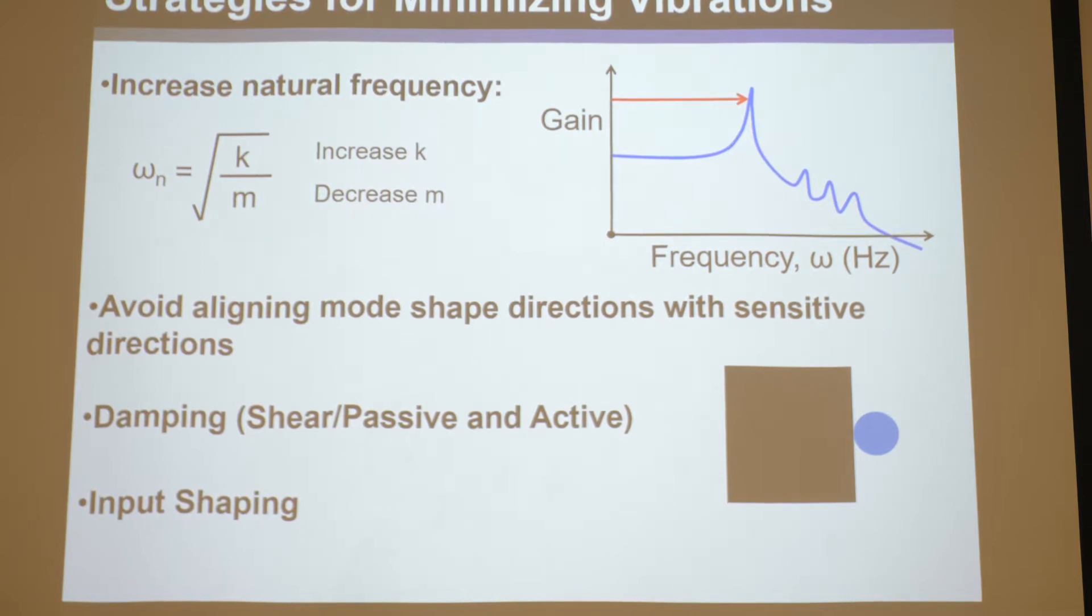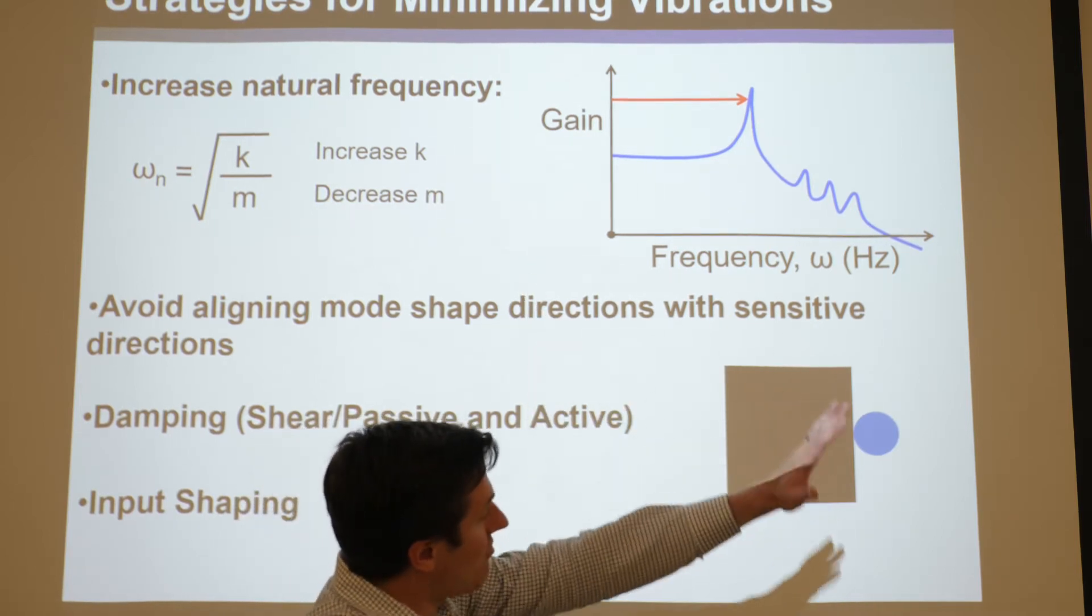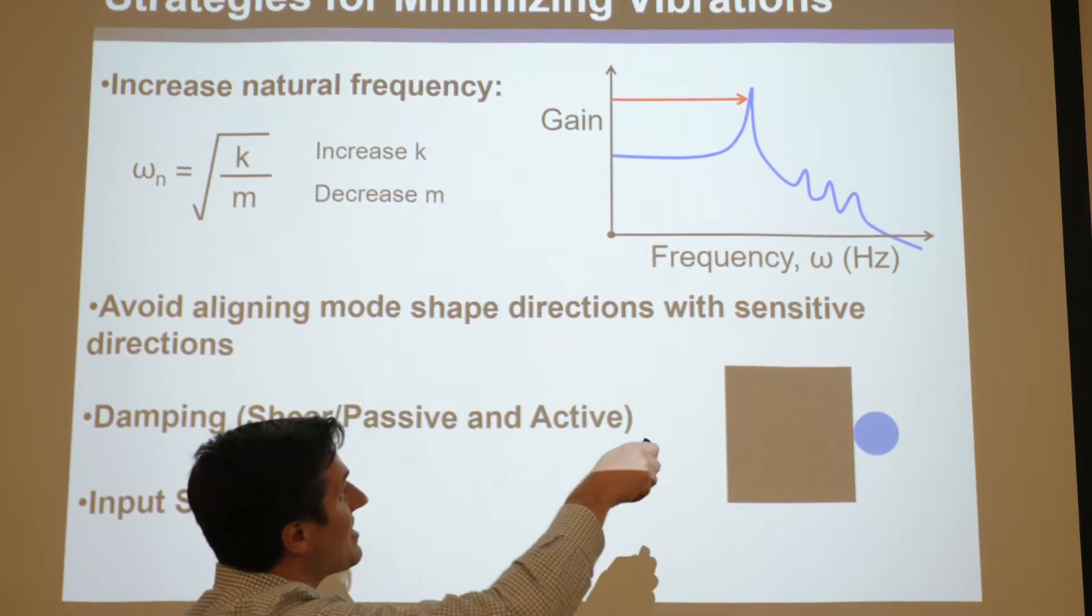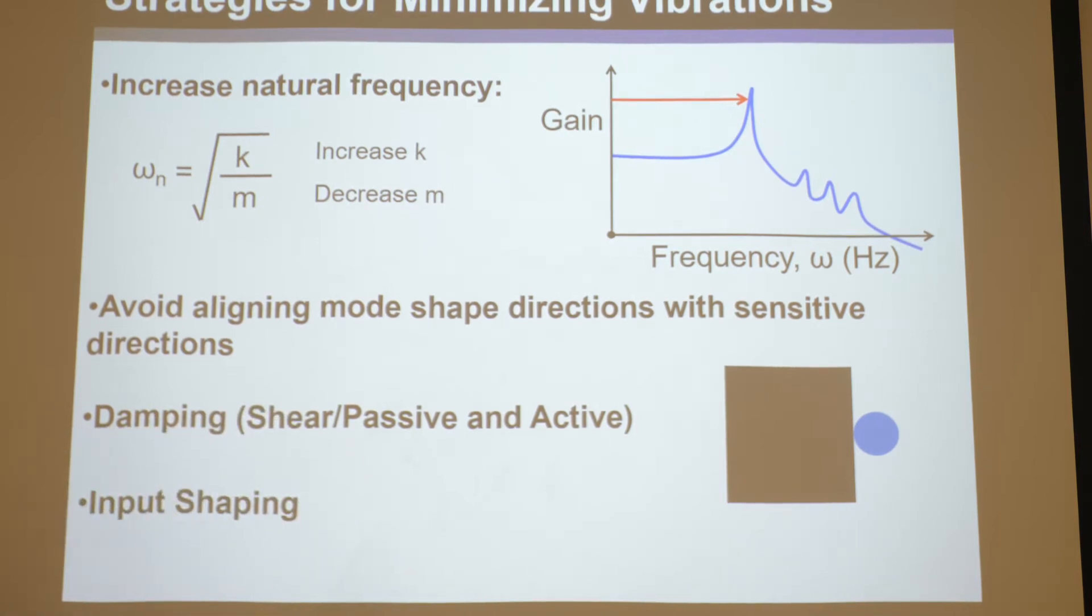Everything after the first natural frequency, from here on to the right, is kind of trash. You don't want to be driving your system with frequencies at or above the first natural frequency. You want to be driving things within the bandwidth, shown by this red line, where everything before that is essentially one-to-one. If you give it an input, it'll do the same thing in the output where its gain is one.